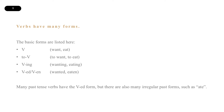Verbs have many forms. The basic forms are listed here. So we have the base verb, such as want or eat; the infinitive with to, such as to want and to eat; and the present participle, which is the -ing form.